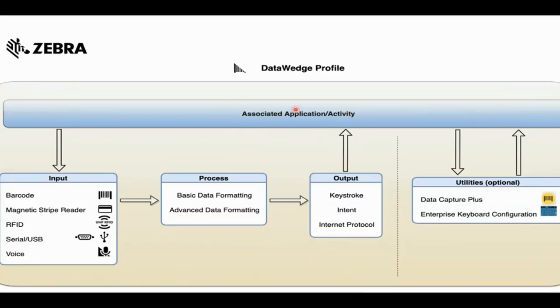Lastly, there's the associated application or activity which specifies where the process data is received. When that associated app or activity is launched, the DataWedge service loads the profile and its configurations, handling the data according to the settings specified.